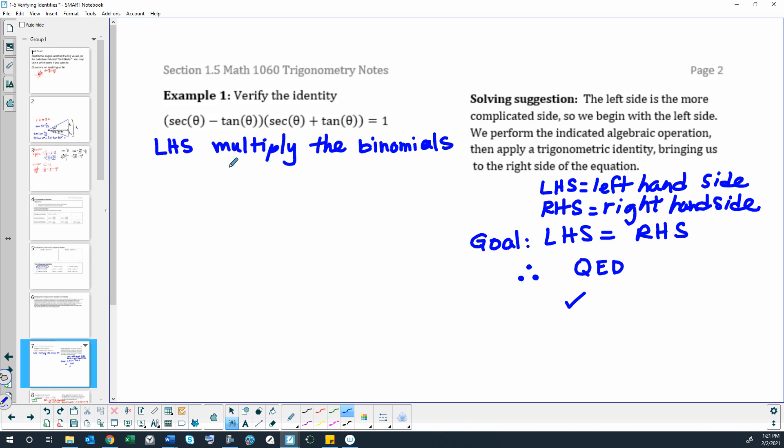We might call that the distributive property. We might call that FOIL, which stands for first, outside, inside, last. And that just says distribute.